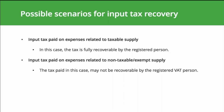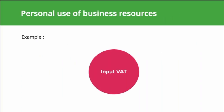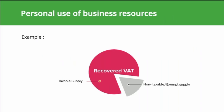There are three possible scenarios for input tax recovery. First, input tax paid on expenses related to taxable supply — the tax is fully recoverable by the registered entity. Second, input tax paid on expenses related to non-taxable or exempt supply — the tax may not be recoverable. Third, input tax paid on expenses related to both taxable and non-taxable or exempt supply — the tax is recoverable on a proportionate basis, and the registered person needs to apportion their input tax between taxable and non-taxable supplies using an input tax ratio of recoverable to total as the basis for apportionment.